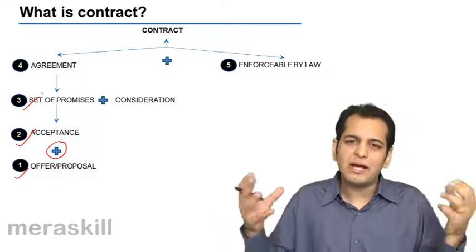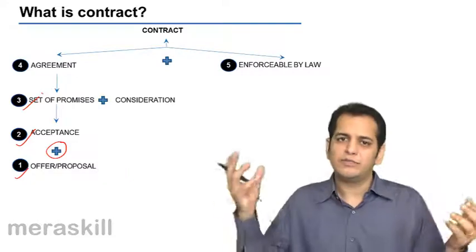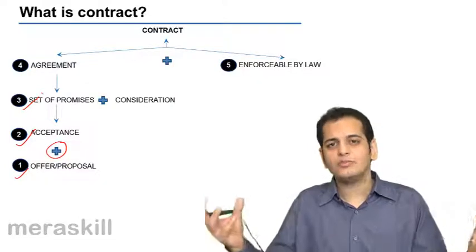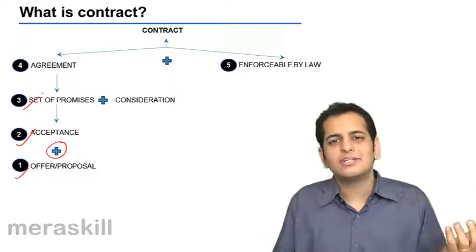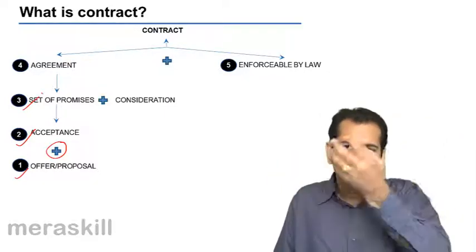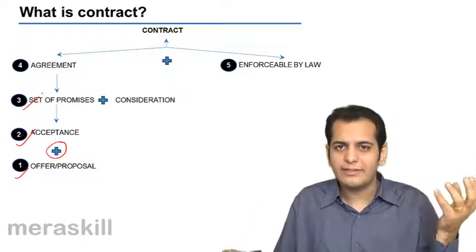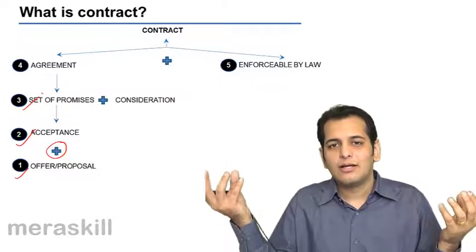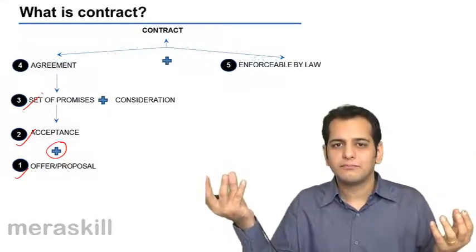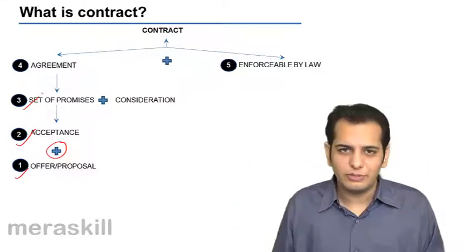Offer plus acceptance leads to a promise or set of promises. There is a set of promises because both parties promise something to each other. One party says, I will give you my bike; the other says, I will give you 20,000. So we have a set of promises here, and these set of promises form consideration for both of them. Consideration is something in return.